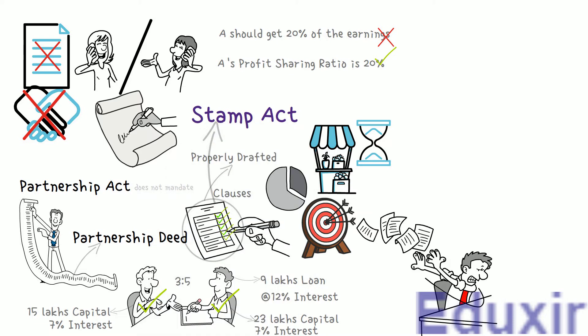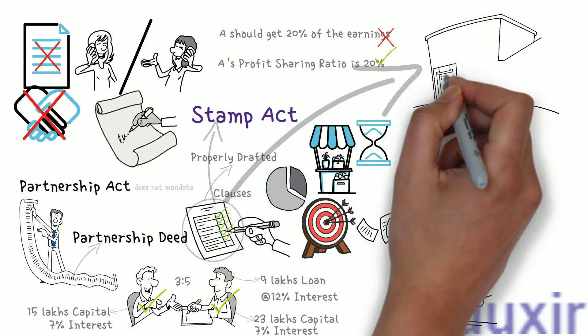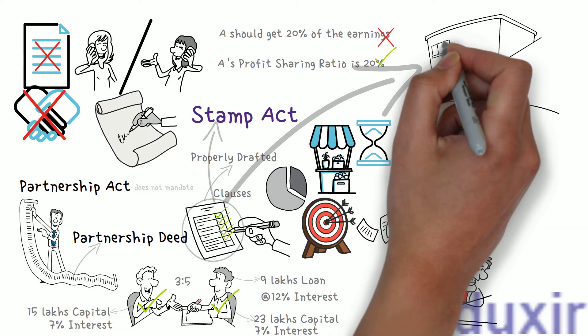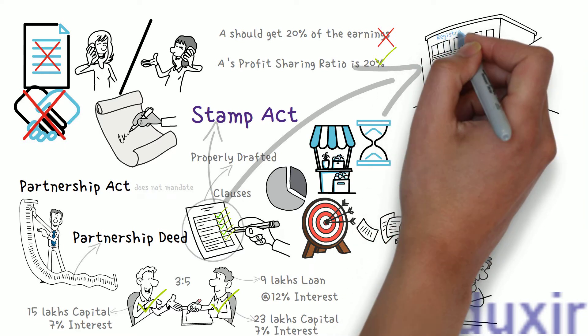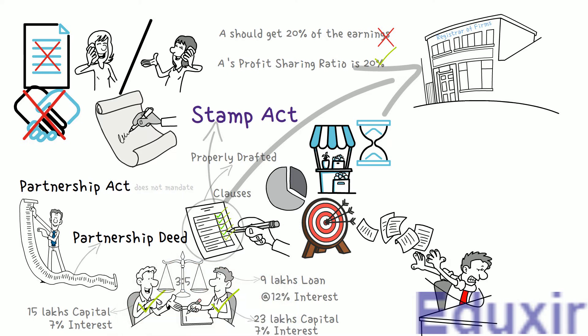The Registrar of Firms comes into the picture once the partnership deed is prepared. It is preferred that the deed should be registered with the Registrar of Firms, though it is not mandatory. However, if it is registered, there are some legal rights that the firm and individual partners can get — for example, one partner can sue another partner or the firm. If registration with the Registrar is not done, the partners don't enjoy these legal rights. So, if they want these legal rights, they should register with the Registrar of Firms.